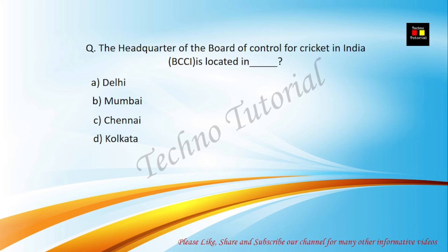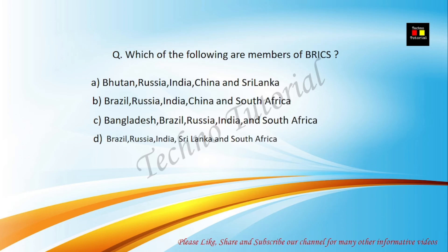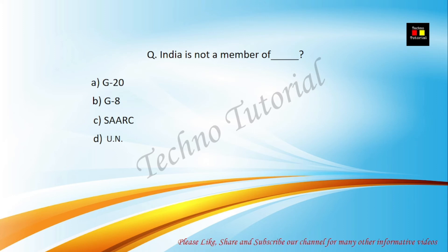The headquarter of the Board of Control for Cricket in India (BCCI) is located in — options are Delhi, Mumbai, Chennai, and Kolkata. The correct answer is Mumbai. Which of the following are members of BRICS? The correct answer is B — Brazil, Russia, India, China, and South Africa.